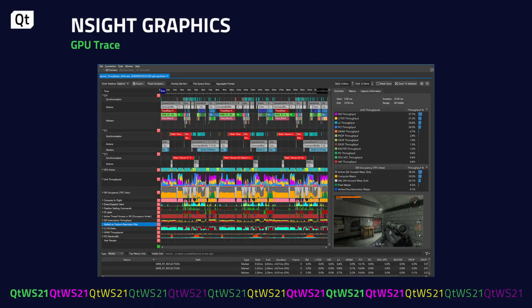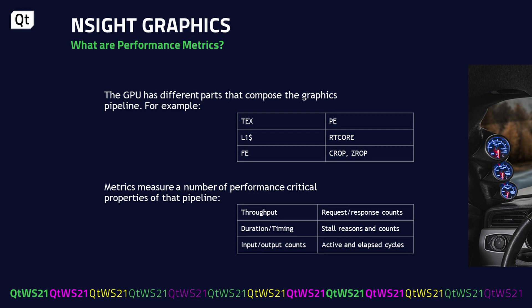When you need to improve your GPU performance, timing information provides a picture of where you are over budget, but it doesn't necessarily tell you how to improve performance of a given work regime. With GPU Trace, you are able to see low-level metrics that map directly to GPU hardware. Metrics, also sometimes referred to as performance counters, are measurements taken for different parts of the GPU. Similar to the gauges in a conventional car, these metrics help you determine if your engine is working at peak efficiency. GPU hardware units that work at the lowest level include the texture unit, primitive engine, L1 cache, RT core, front end, as well as color ROP and ZROP. When considering a percentage value like throughputs, 100% is usually not desired, as that implies you are saturating that part of the graphics pipeline.